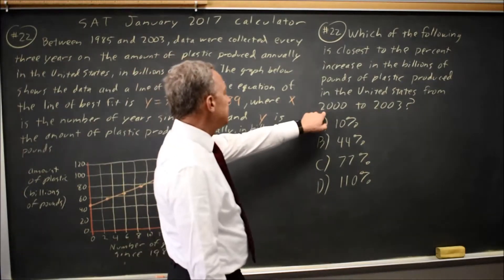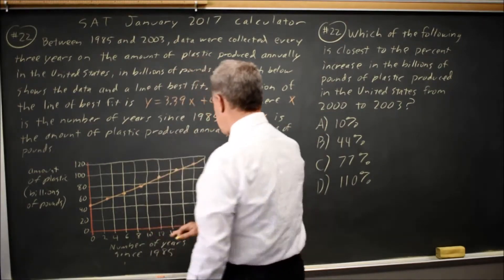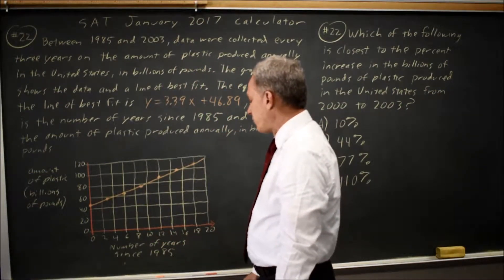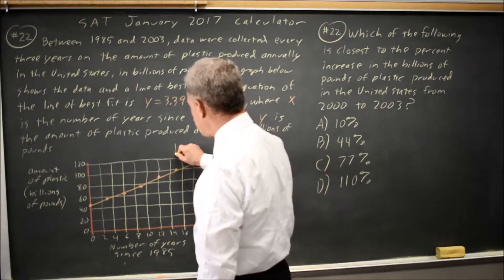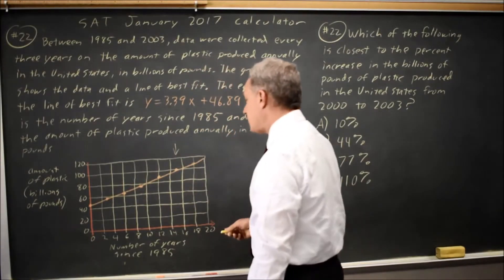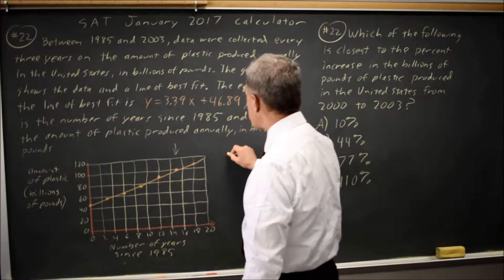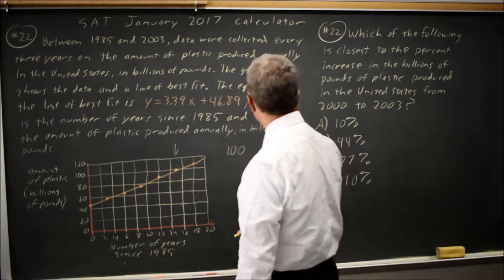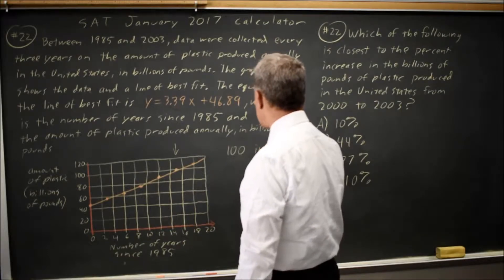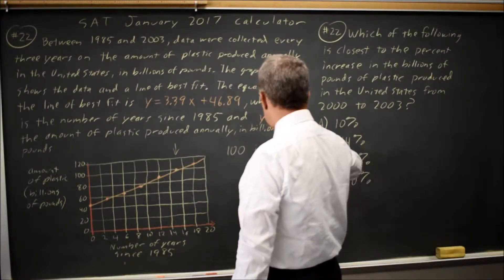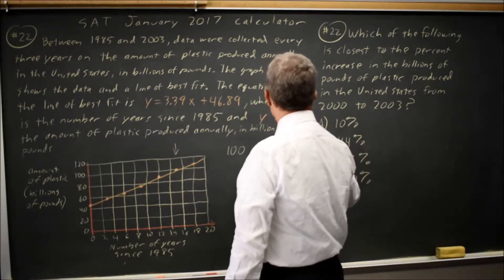So in year 2000, x, our horizontal axis, is years since 1985, so we're looking for year 15, which is right here, and that value is just under 100. I'm going to call it 100, and in the year 2000.